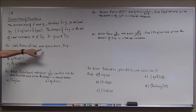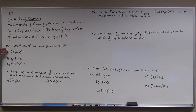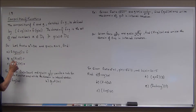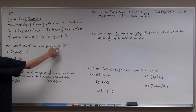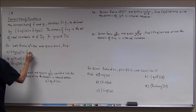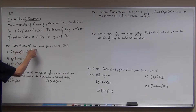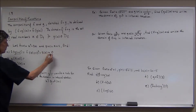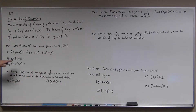Let f of x equal x squared minus 3x and g of x equal x plus 4. Find f of g of negative 4. Well, f of g of negative 4 — first you find g of negative 4. Plugging negative 4 into g of x: negative 4 plus 4 is 0. Now you find f of 0, which is 0 squared minus 3 times 0, or 0. You find the inner function, then you take the outer function of whatever you get.